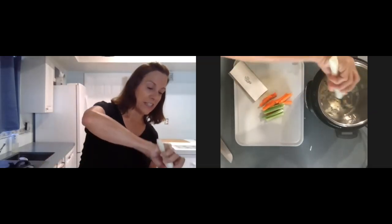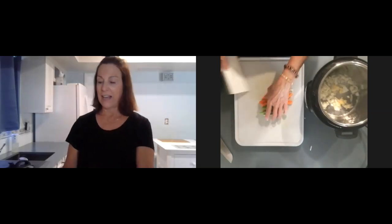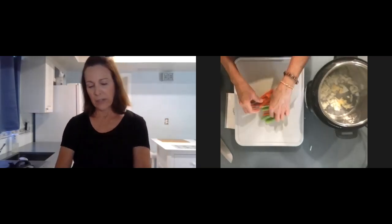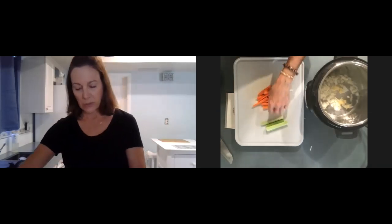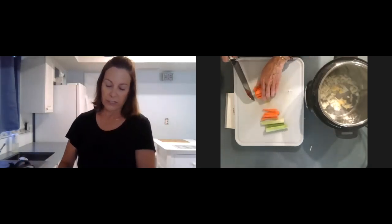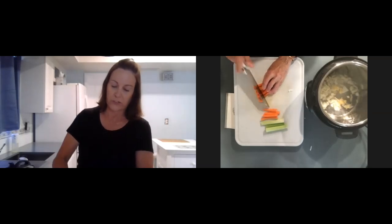I'm going to get the garlic and the onion going first. And then I'm going to add carrot and celery about a cup each. So that means one large carrot. The onion is one small onion, two cloves of garlic.